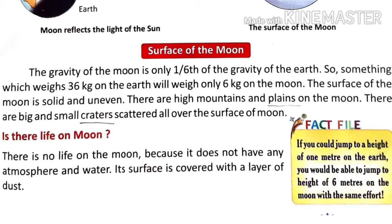We have discussed the surface of the Moon. The surface of the Moon is solid and uneven. There are high mountains and plains, and big and small craters.